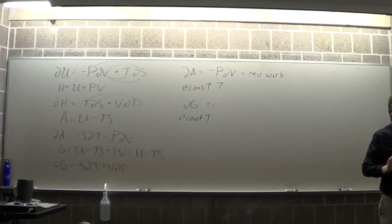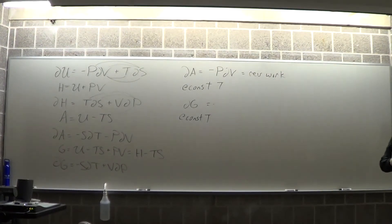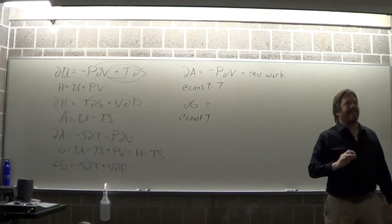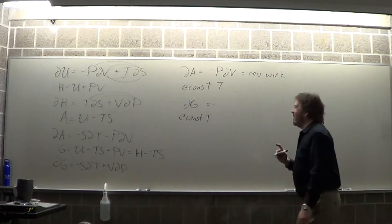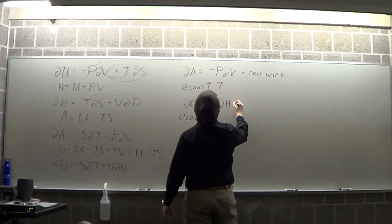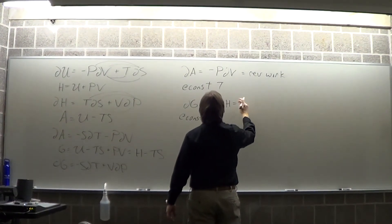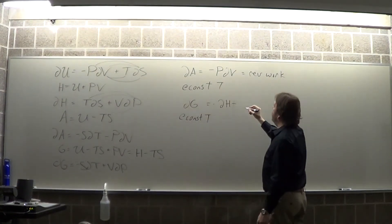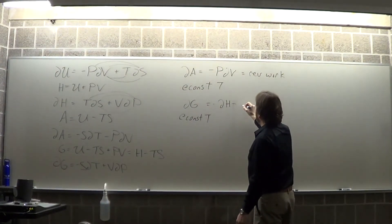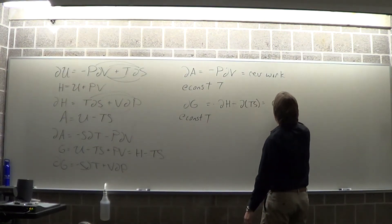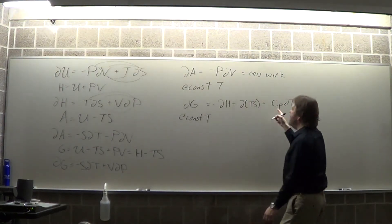At constant T and constant volume, the change in A represents the change in total entropy via the Clausius inequality. Now, change in G at constant T: dG = VdP. That's a bear to calculate especially when volume is constant. There's a trick using the dH form of G: G = H - TS, so dG = dH - TdS - SdT.